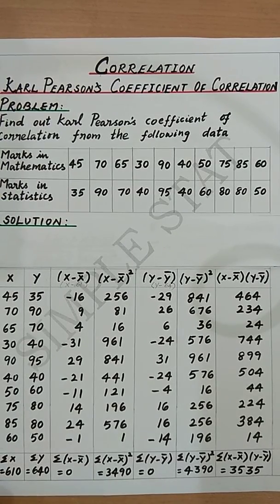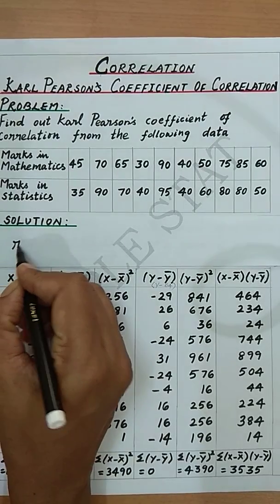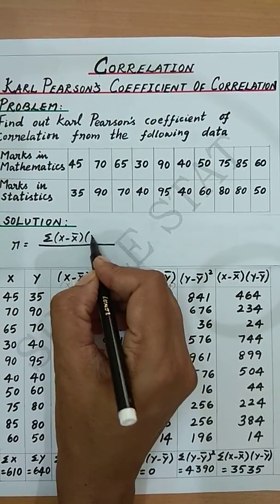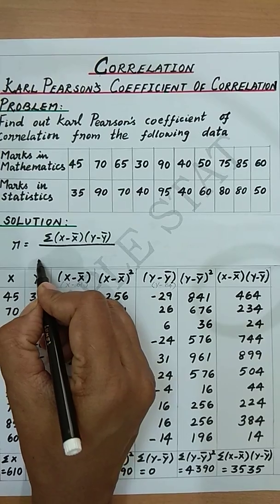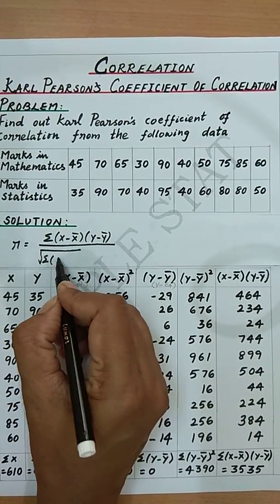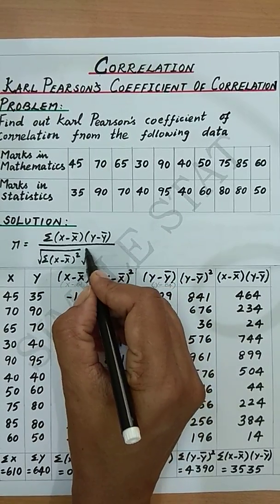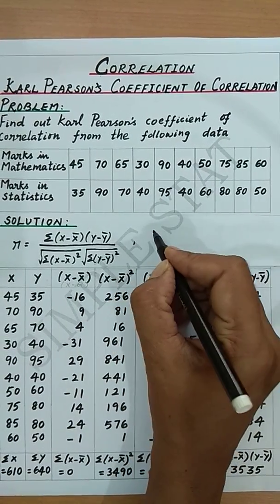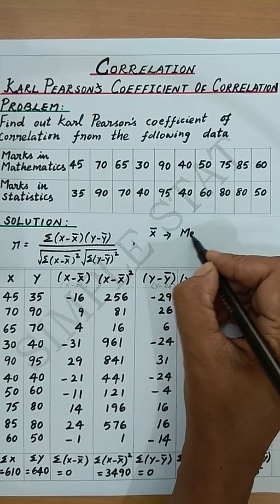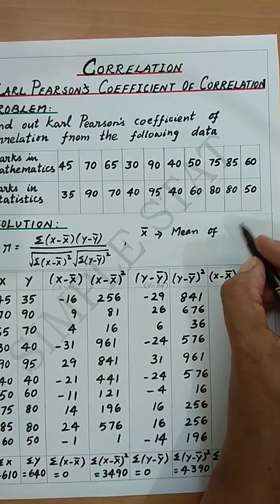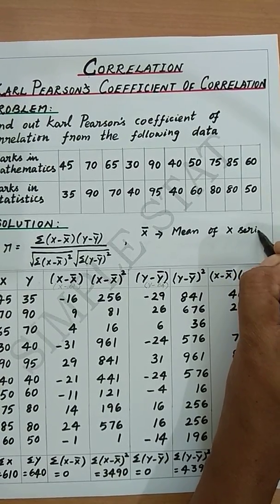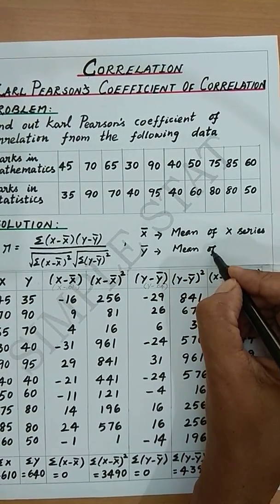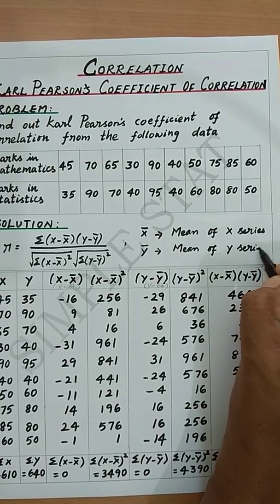Let's now proceed with the solution. The formula is r equals summation (x minus x bar) into (y minus y bar) divided by square root of summation (x minus x bar) whole square into square root of summation (y minus y bar) whole square, where x bar denotes mean of x series or the variable x and y bar denotes mean of y series or the variable y.